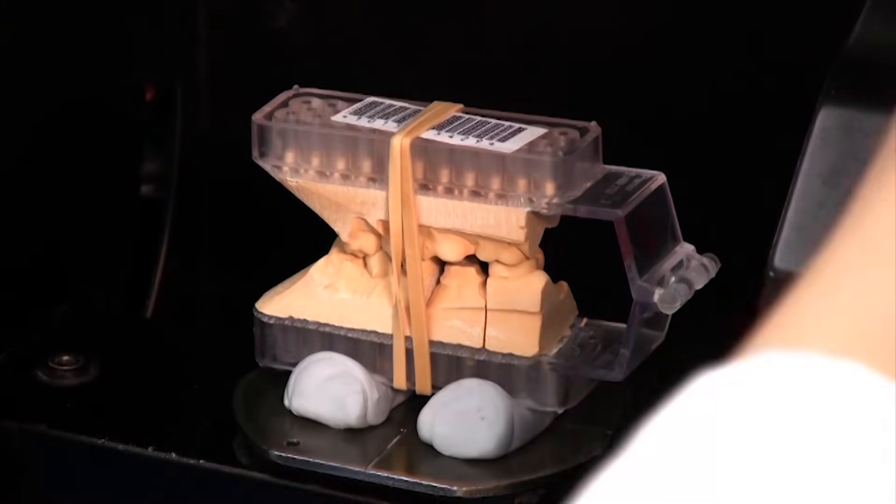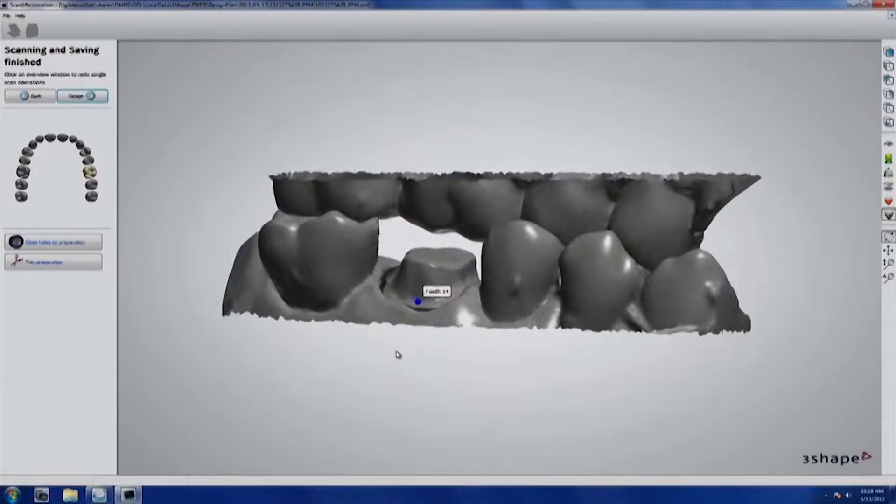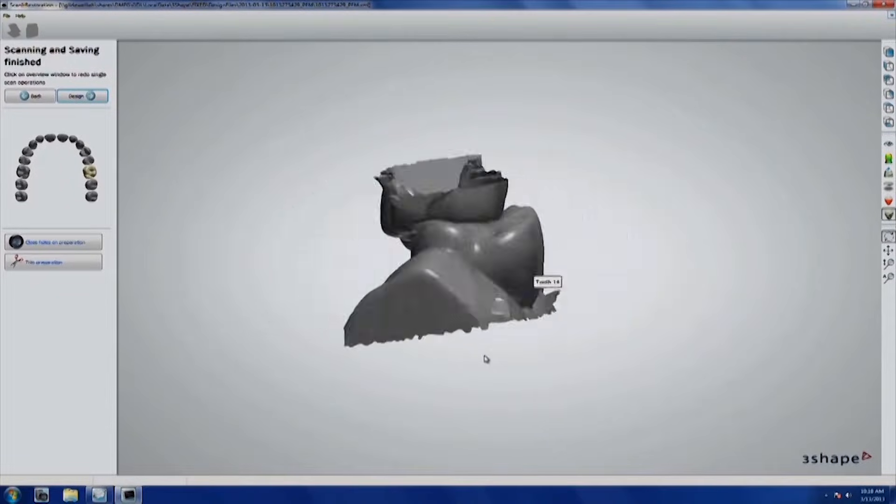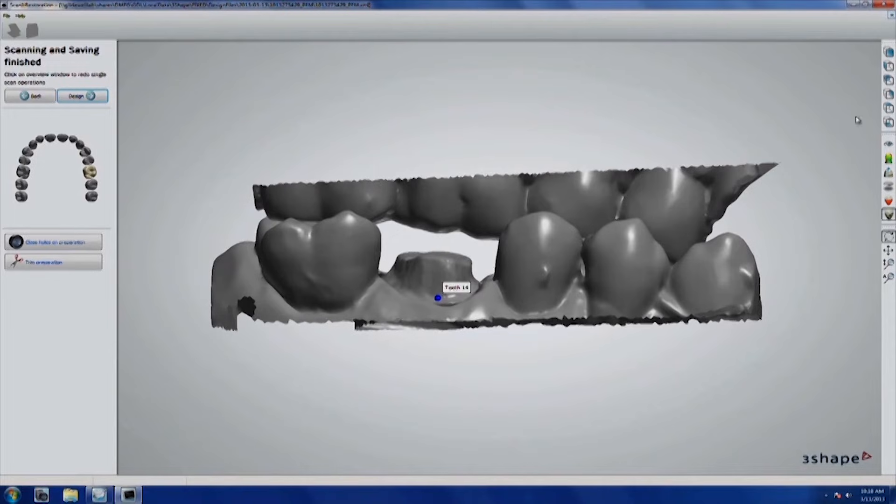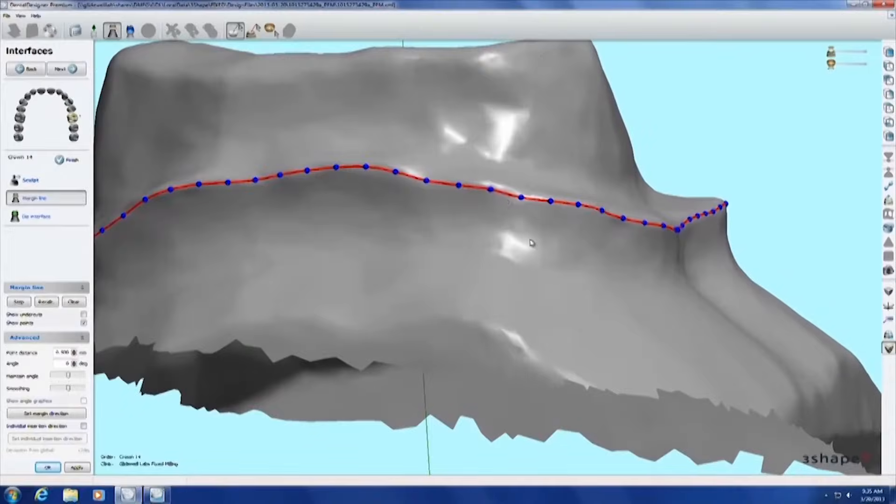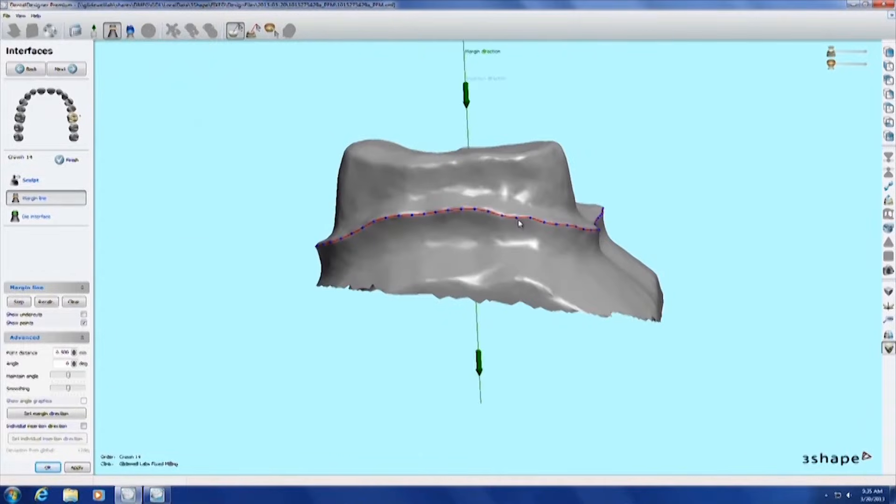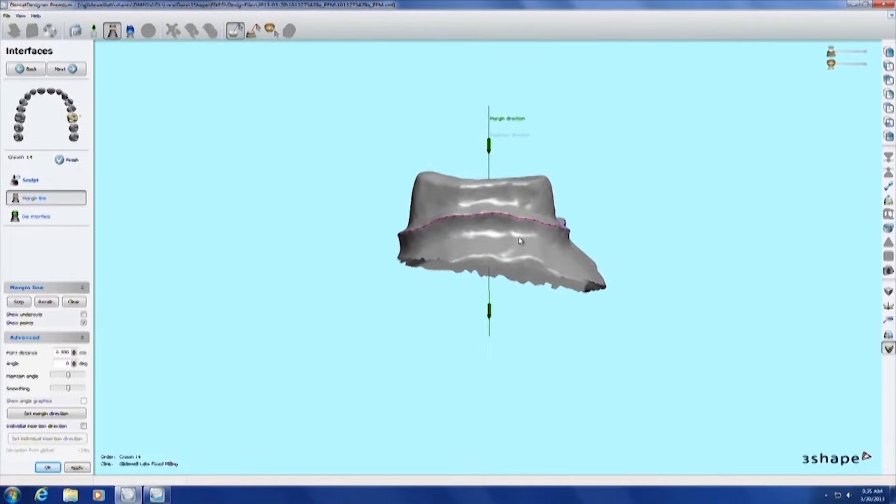There's the articulated model. So now we're going to be able to scan that from the side. And now we can see exactly how much reduction we have between that prep tooth and the opposing tooth. No more guessing on our part. And this is one of the big benefits for dentists who have digital impression scanners, is that they can see the reduction actually in the mouth.